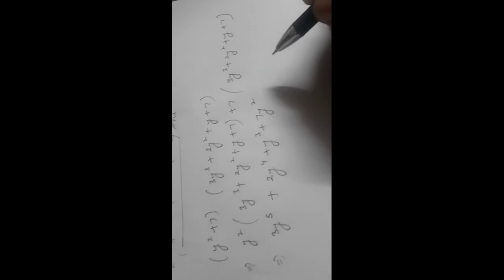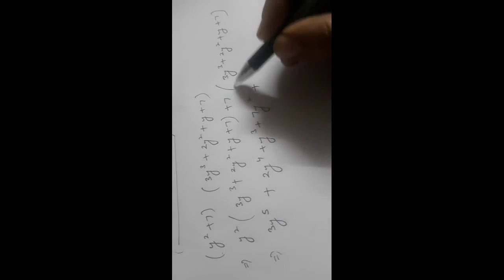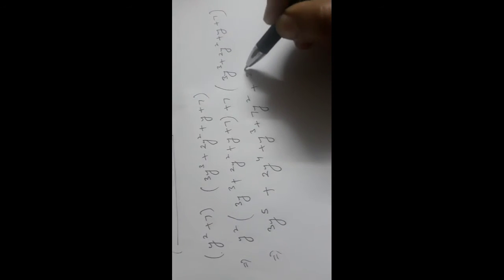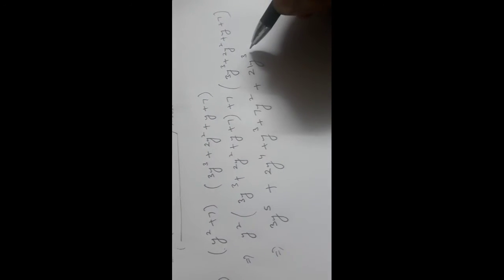Now 7 multiplied by 3y³ gives 21y³. 7 multiplied by 2y² gives 14y². 7 multiplied by y gives 7y. And 7 multiplied by 7 gives 49.